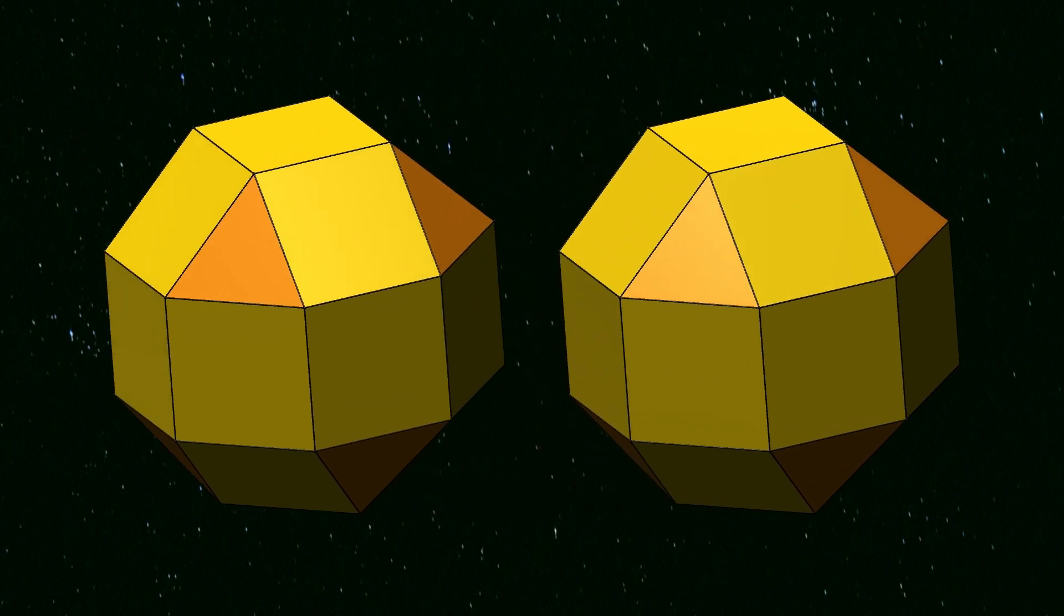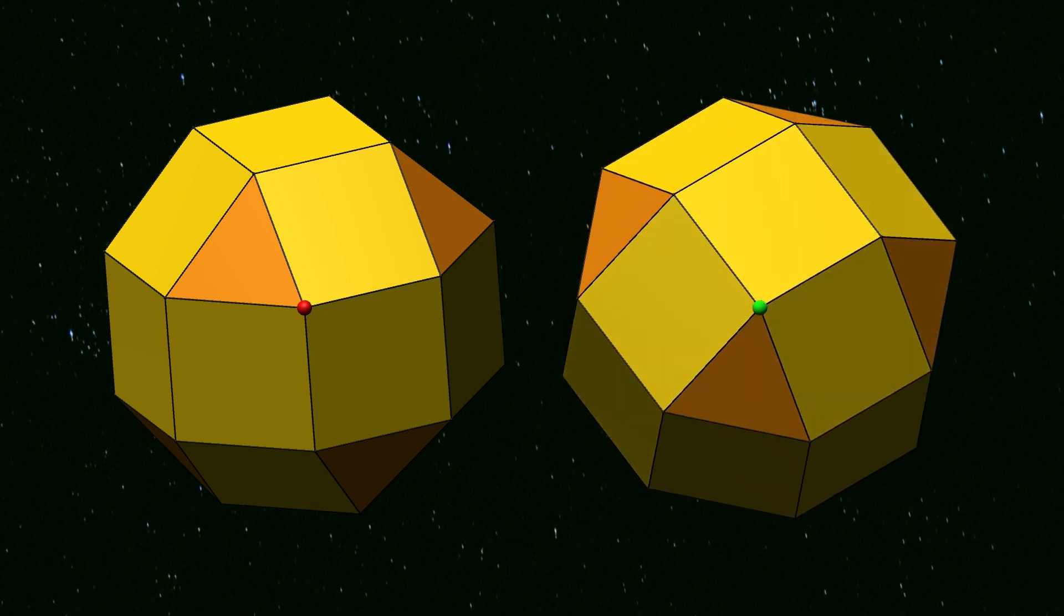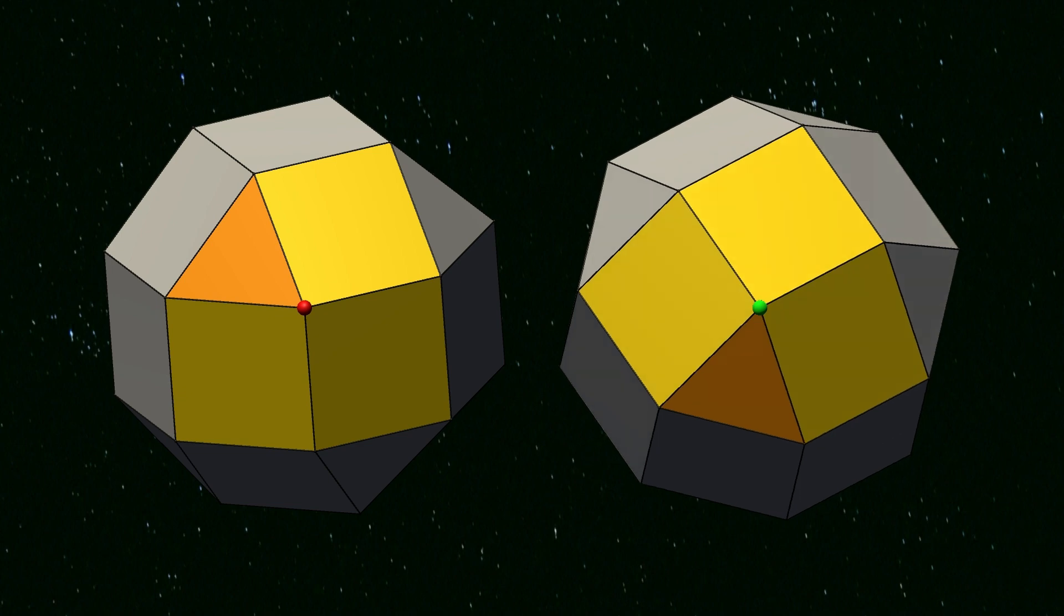Let's compare the vertices marked red and green. We can rotate the object on the right so the green vertex is facing us. Then, looking only at the faces surrounding the vertex, we can rotate again so they are aligned.